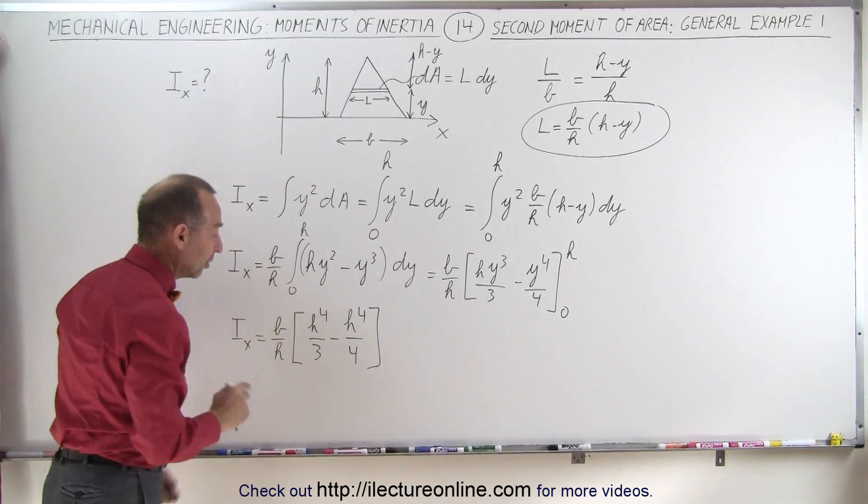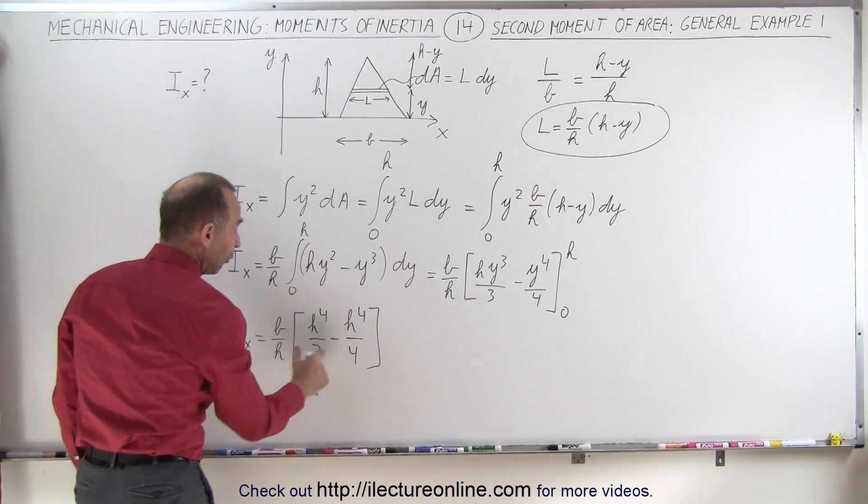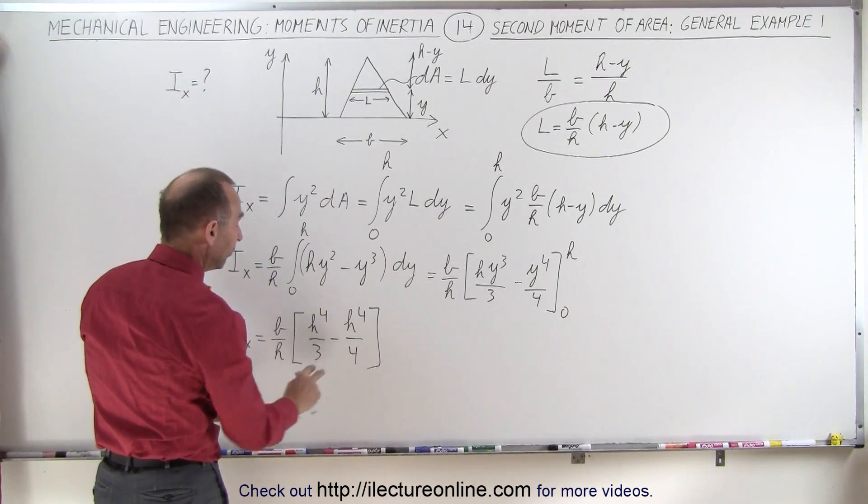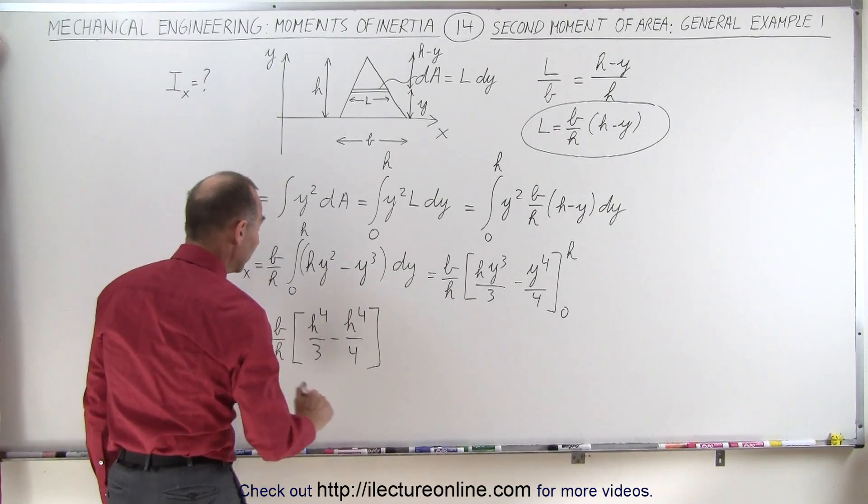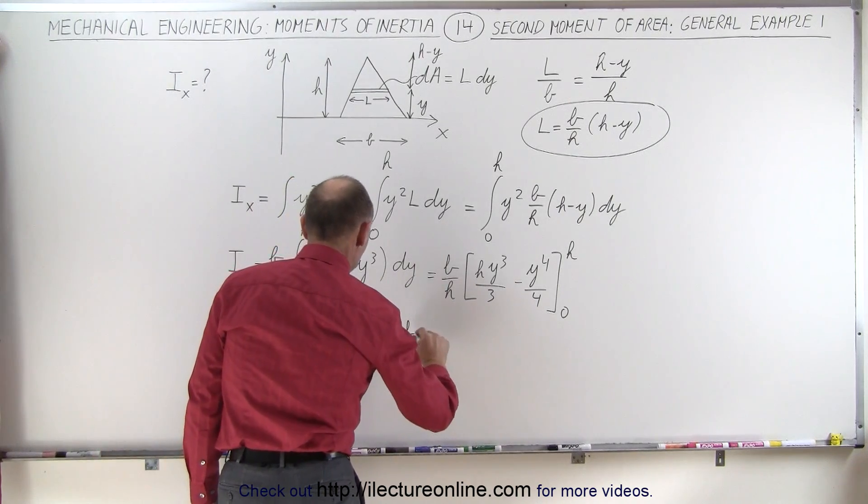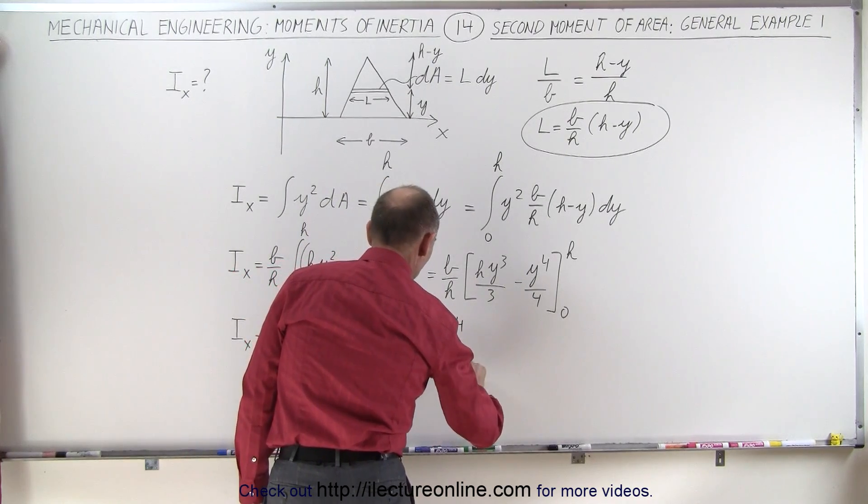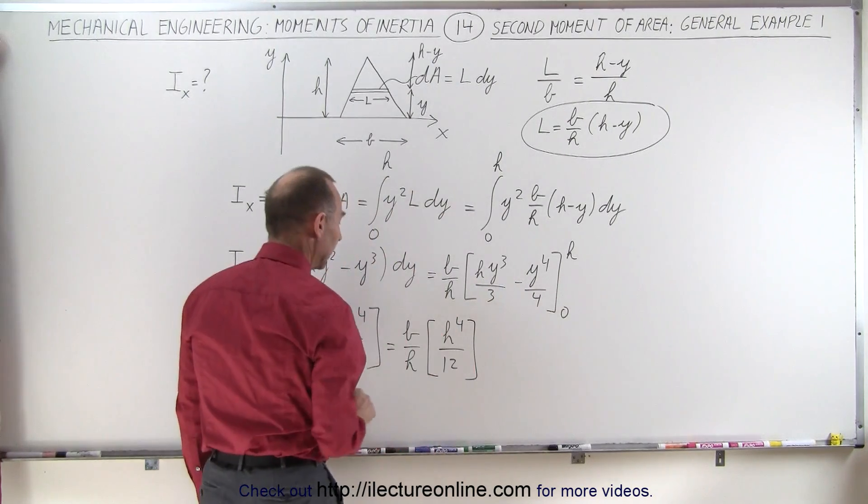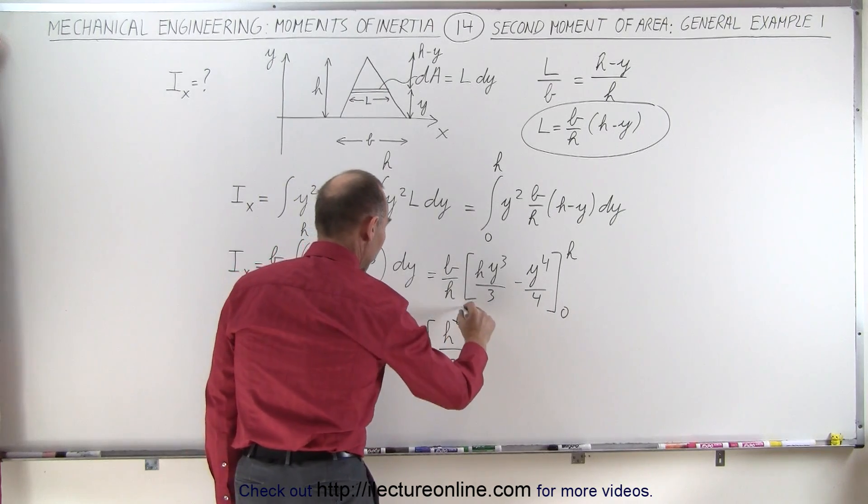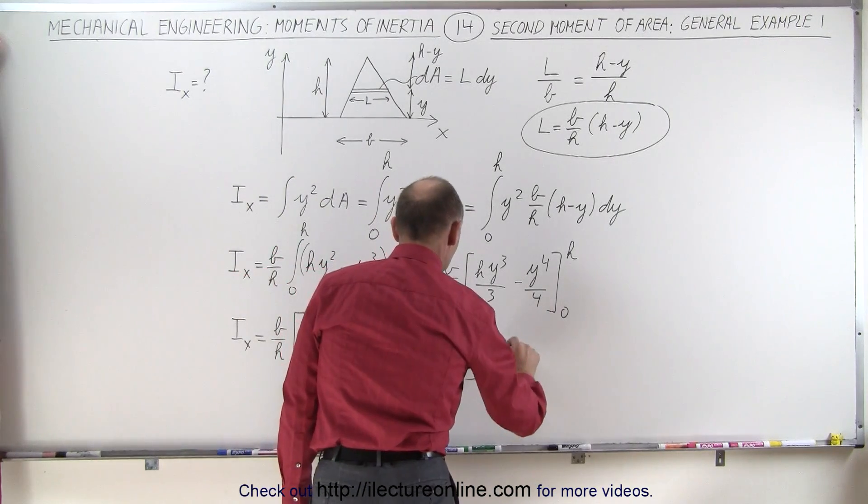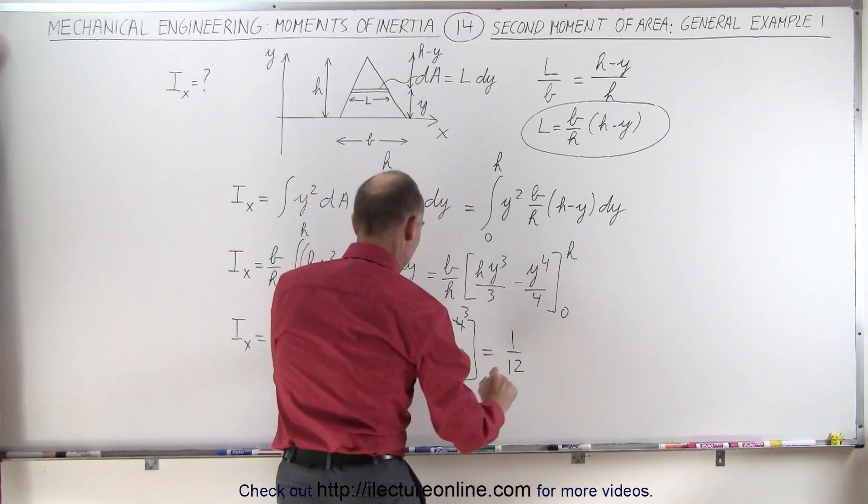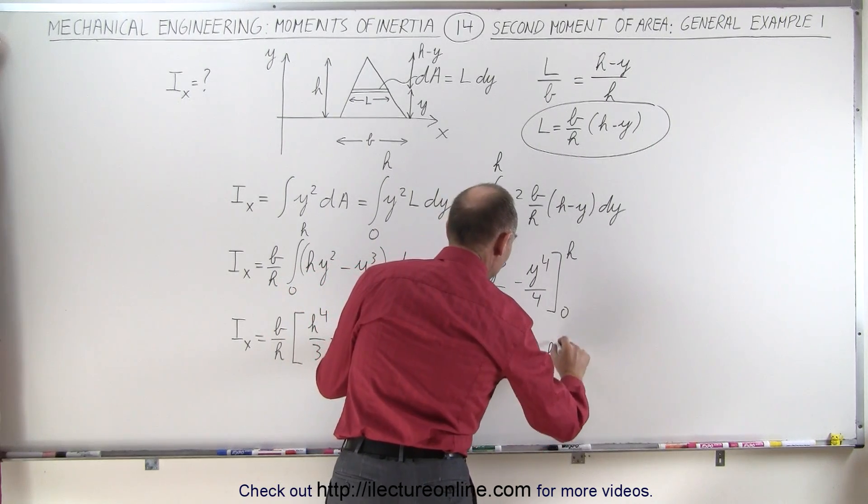Notice the numerators are the same, but the dominators are different. We have a 3 and a 4, the common denominators 12, since they only differ by 1. This can then be written as b over h times h to the 4th divided by 12. And this h cancels out one of those, which means that this is equal to 1 twelfth b times h cubed.